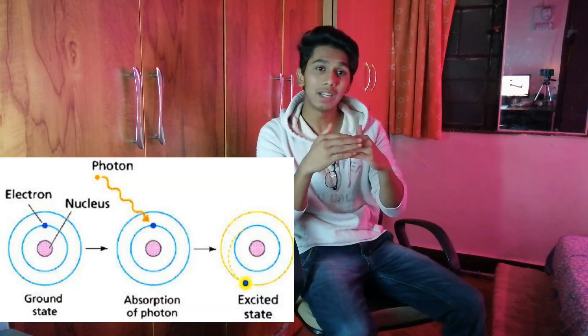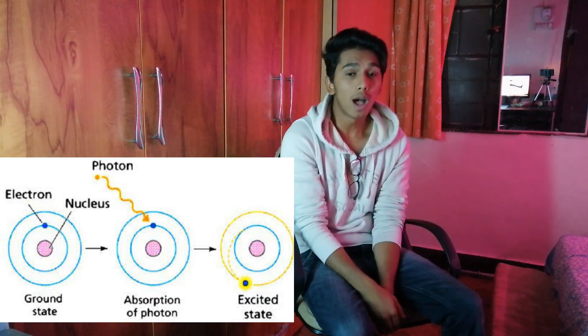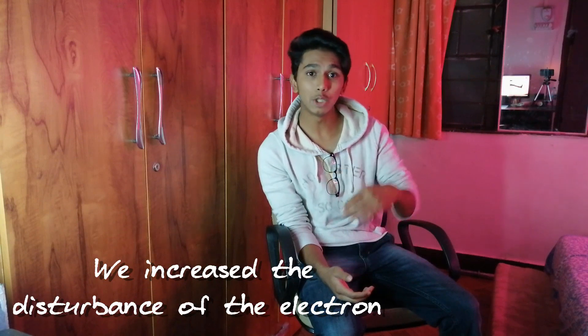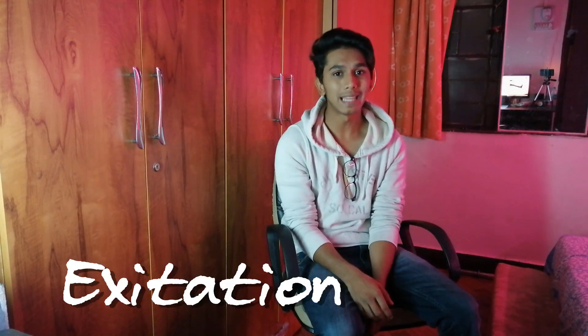A photon is a packet of energy, and energy is nothing but disturbance. We also know that when an electron is provided with energy, it jumps from a lower energy state to a higher energy level — this is called excitation. This energy is provided by a photon. A photon has energy, energy is disturbance, so we are providing disturbance to an electron, which actually increases the disturbance in the electron itself. Matter stores energy by vibrating, and vibrations are nothing but disturbances.